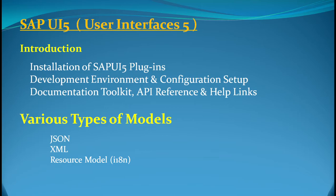For the introduction, you need to know how to install Eclipse and the SAP UI5 plugins, set up a development environment, and complete the configurational setup. API references and documentation toolkit for help links are essential — the API references are like the heart and soul of UI5 development. The major part is installing the required plugins and ensuring you have a proper environment and configuration ready before you start coding an application.